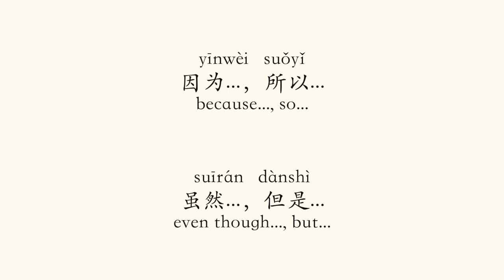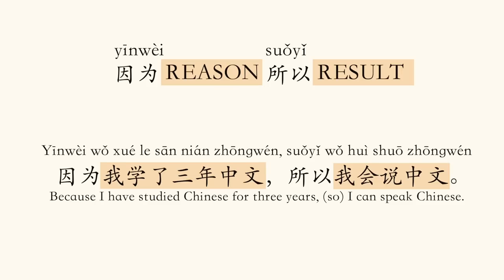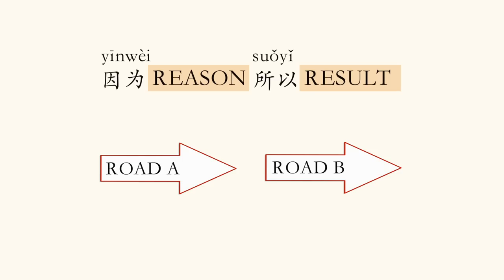So without further ado, let's get started. First of all, I will show you two sentence structures that you've already known: 因为/所以 and 虽然/但是. 因为/所以 means because of the reason, so the result. For example: 因为我学了三年中文，所以我会说中文。By the way, I just got my driving license, so there are lots of traffic regulations in my head. I want to draw you an analogy between Chinese grammar logic and traffic roads. The logic of 因为/所以 is like you're driving and there are two roads that get connected to each other, so the car can keep going in the same direction — the second road turns zero degrees.